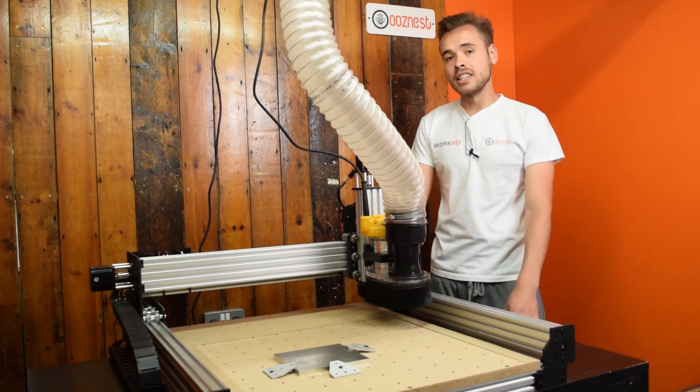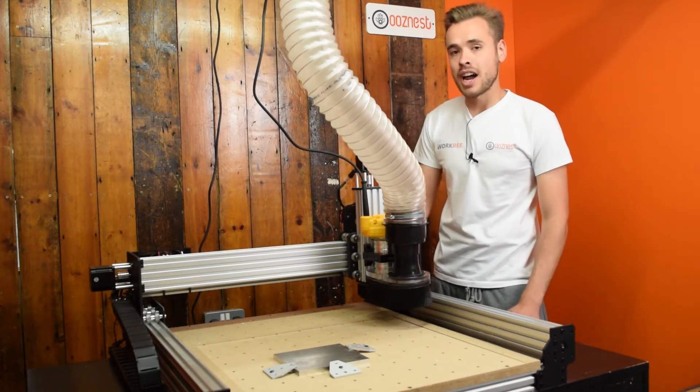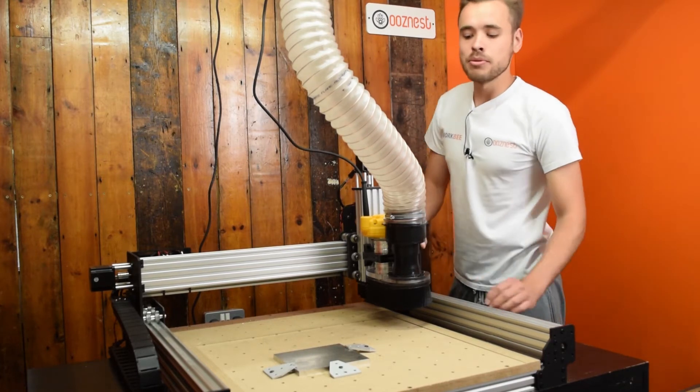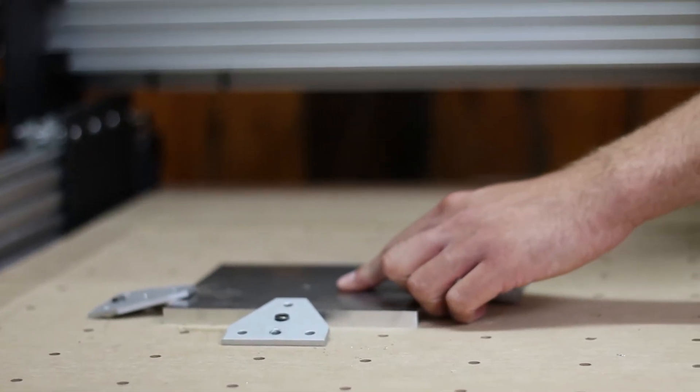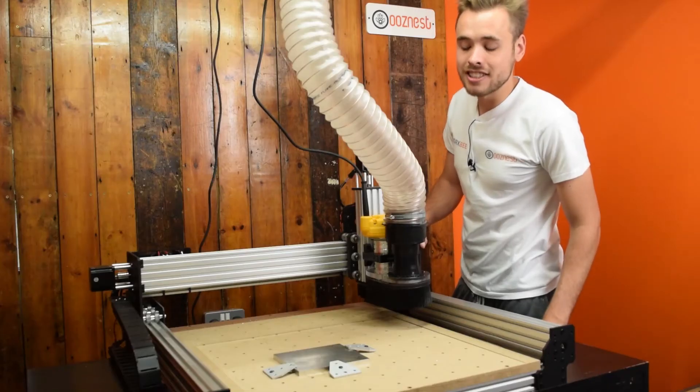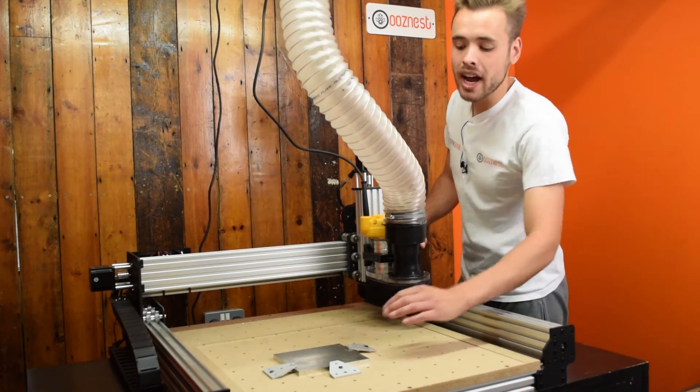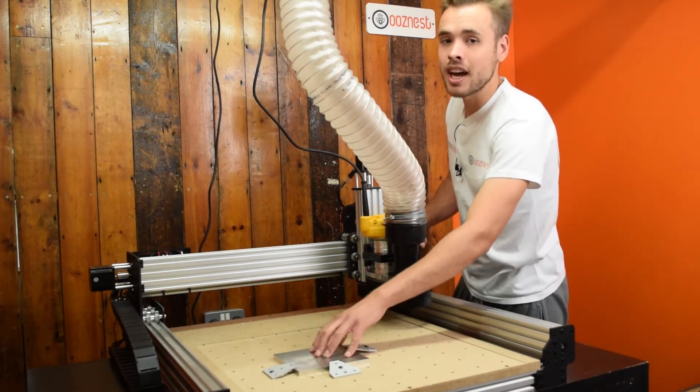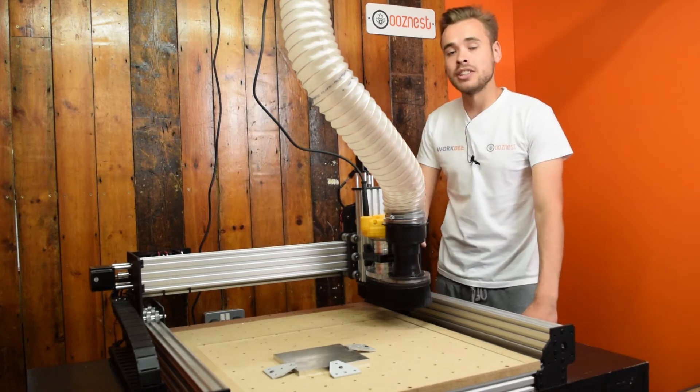So what we need to do is calibrate them by doing a cut and then measuring what the actual value should be. So how we will do this is we will cut a 100mm square out of this aluminium piece. Once it's cut I will take it off and then measure accurately using calipers where it actually cut from the X and Y axis. And use these values and a formula I will show you later on to get the steps per mm.